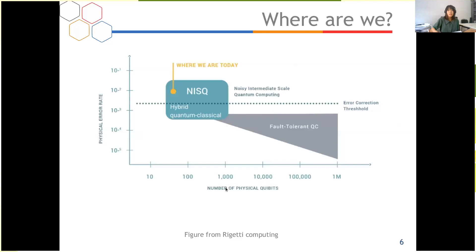So where are we? What is the current status of quantum computing? Here is a figure from Rigetti Computing. Now we only have quantum computers with around 100 qubits — we are in the noisy intermediate scale quantum era. If we want to implement Shor's algorithm, we need a fault-tolerant quantum device requiring millions of qubits, which is largely beyond the capability of near-term quantum devices.